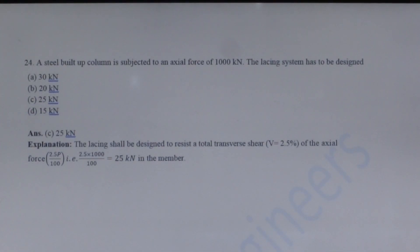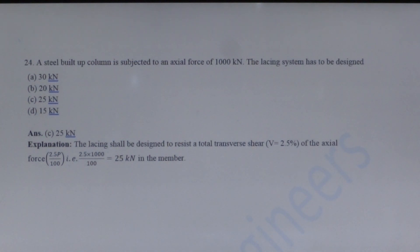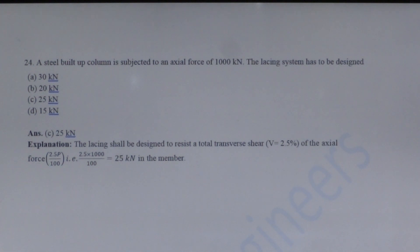Next question: A steel built-up column is subjected to an axial force of 1000 kN. The lacing system has to be designed. In the design of a lacing system, lacing shall be designed to resist a transverse shear equal to 2.5% of the axial load. Here axial load = 1000 kN, so 2.5% of 1000 kN = 25 kN is the design transverse shear.